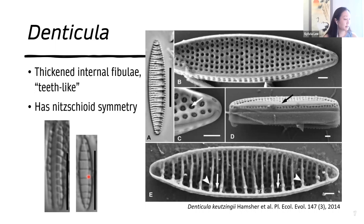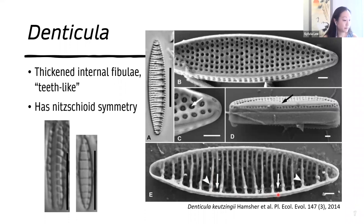Denticula is also related to Nitzschia, has Nitzschioid symmetry, and on the internal side of the valve it has these thickened fibulae. The arrowheads are pointing to the fibulae, and the arrows are pointing to the portulae. These thickened fibulae give it a teeth-like appearance, hence the name Denticula.